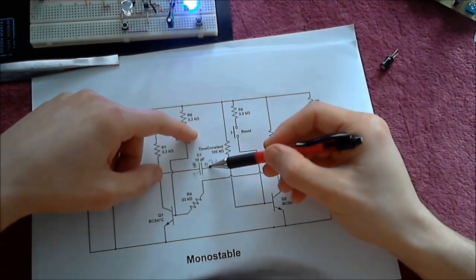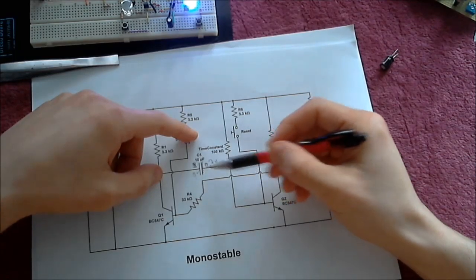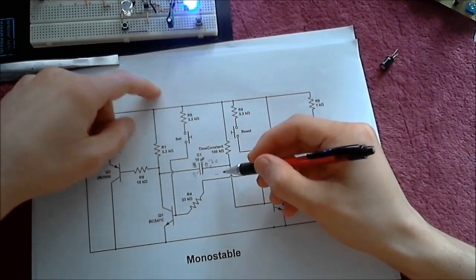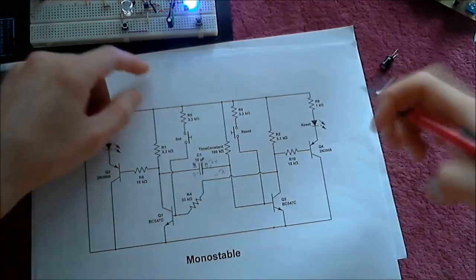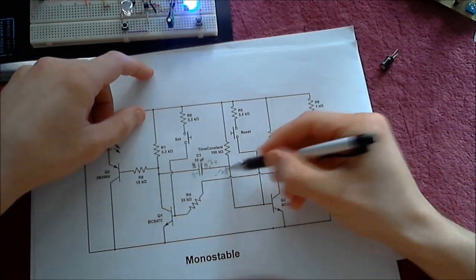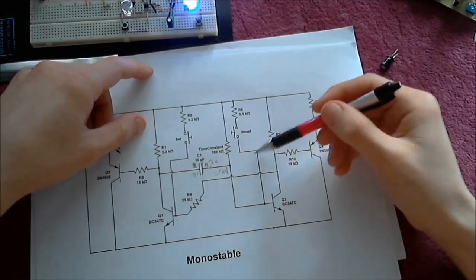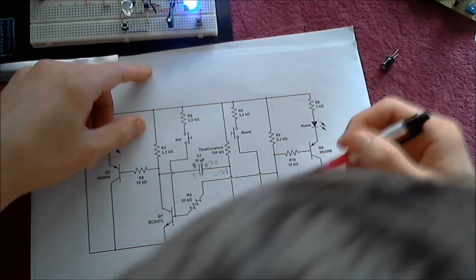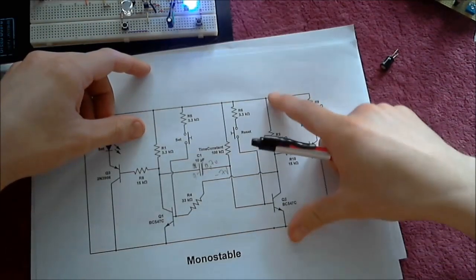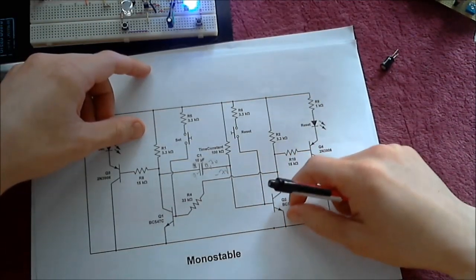When it does, the collector goes low and this side of the capacitor now becomes point something volts. What that does to the other side, it pulls this side of the capacitor down to a negative voltage. My voltmeter told me that it goes down to about minus 7 volts.